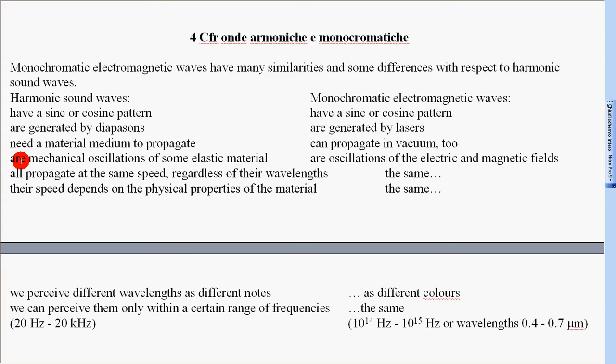Sound waves are mechanical oscillations of some elastic material. Electromagnetic waves are oscillations of the electric and magnetic fields. Both sound waves and electromagnetic waves all propagate at the same speed regardless of their wavelengths.